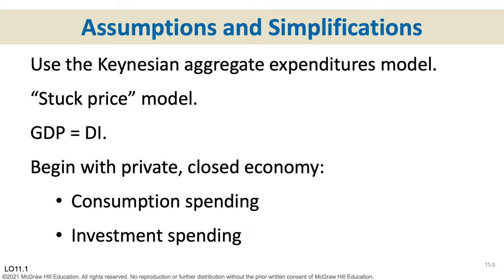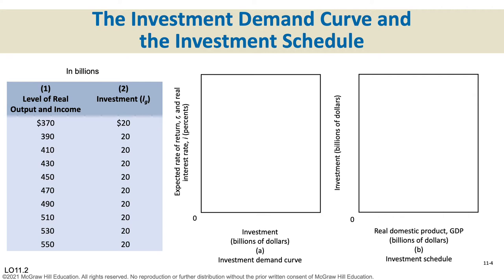We start out with a private closed economy because we haven't yet introduced government and we haven't yet introduced net exports. So right now we just have consumption spending and investment spending. That's right where we left off at the end of chapter 10.